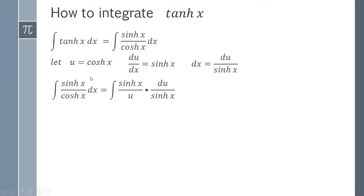And the wonderful thing about this u substitution is that your sinh cancels out absolutely perfectly. And so you end up with the integral of one over u, because the sinh has all cancelled out.